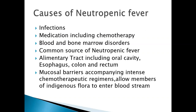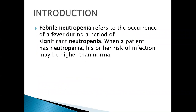What are the main causes of neutropenic fever? It may be infection. In our unit we use conditioning regimens including chemotherapy, and blood and bone marrow disorders. The common source of neutropenic fever includes the alimentary tract — oral cavity, esophagus, colon, and rectum. Mucosal barriers compromised by intense chemotherapeutic regimens allow members of the endogenous flora to enter the bloodstream.